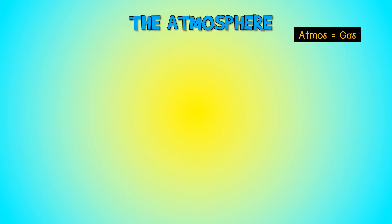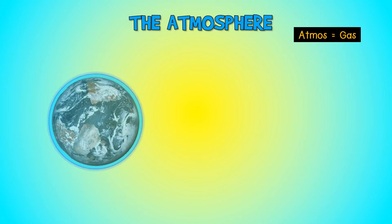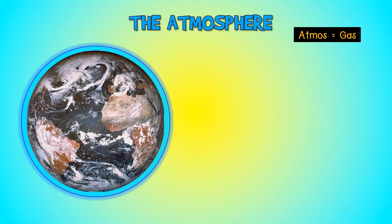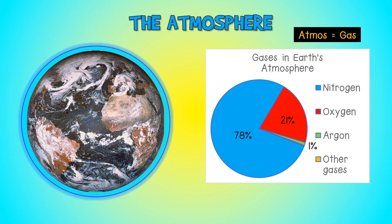The atmosphere. The word 'atmos' means gases, so the atmosphere consists of gases that surround the Earth. There are two main gases: nitrogen makes up about 78% of the atmosphere, whilst oxygen makes up 21%. Only 1% of the atmosphere is made of argon. A very small amount of trace gases such as water vapor and carbon dioxide are also found in the atmosphere.